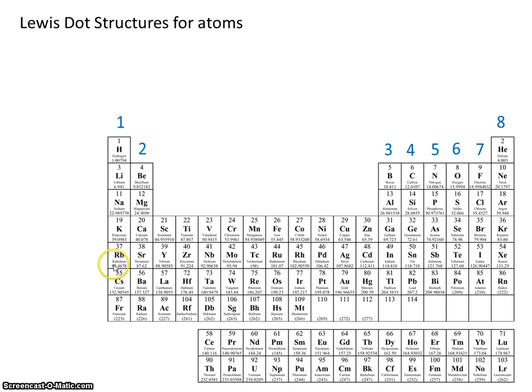So this is group one. All the elements in group one have one valence electron. All the elements in group two have two valence electrons, all the way over to group eight. These all have eight valence electrons. So a Lewis dot structure helps us keep track of an atom's valence electrons.